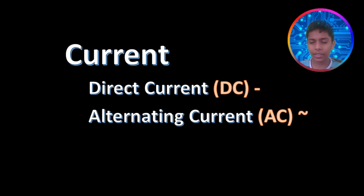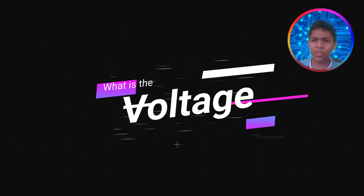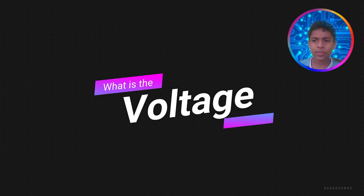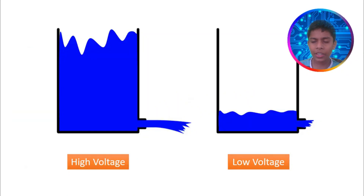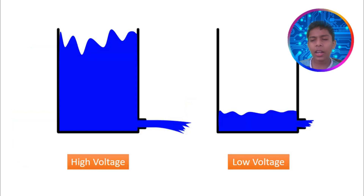Our next topic is going to be voltage. The first part is direct current and the second part is alternating current. Voltage is the amount of electricity you store in a battery. You can understand that better using the figures shown in the video.